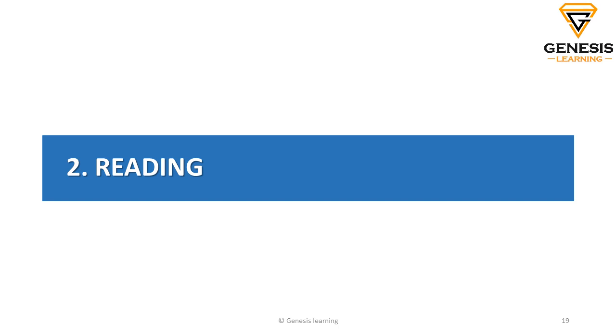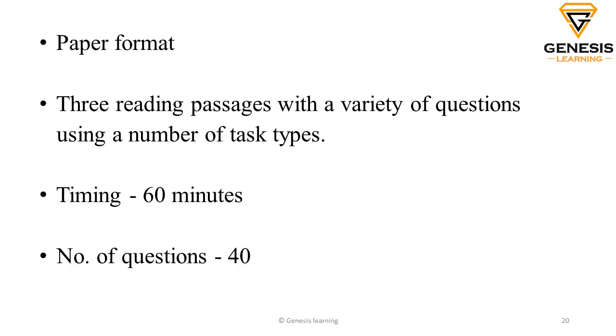Now let's move on to the second module, which is the reading. As soon as you finish your listening, you move on to the reading. In the listening, the timing is managed by the audio, but in the reading, you have to manage your own time. You will get a total of one hour and there are three sections in the reading, so you have to spend approximately 20 minutes for each section. There is a small difference between the academic and the general: in the academic version, the reading passages are more in the academic context, whereas in the general one, it's more general. The question types, time duration, and everything else are the same.